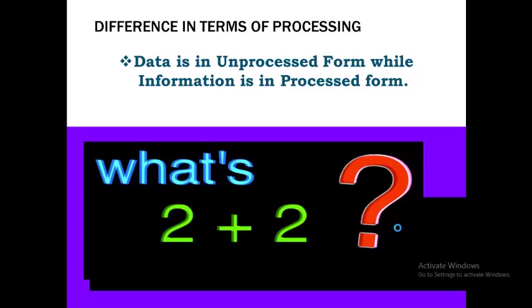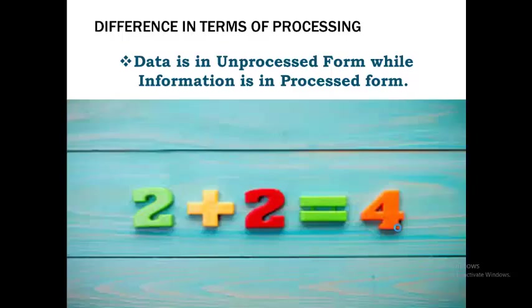But if we apply the processing by performing the addition operation on 2 plus 2, what do we get? We get 4. This 4 is actually the information. As stated, data is in unprocessed form while information is in processed form. So 2 plus 2 on the left-hand side is our data, and after the processing is performed, we get 4 — and that 4 is our information. That's why the bookish definition says that data is a collection of raw facts and figures, while information is the processed form of data. So 4 is the processed form — the information we get after applying the addition operation on 2 plus 2.